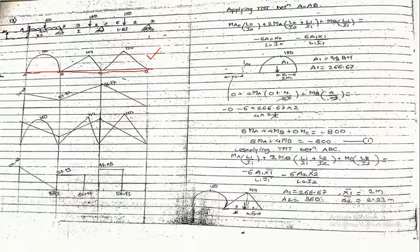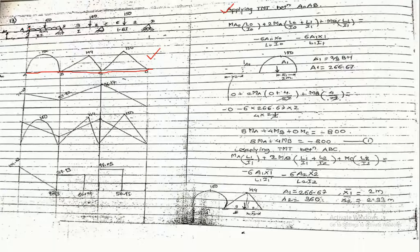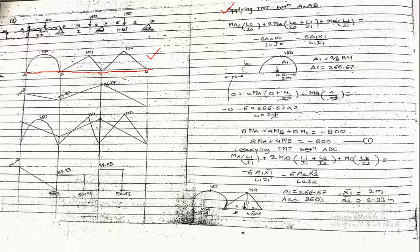The first step — the free bending moment diagram — is now complete. Now we apply the 3-moment theorem. For a fixed support, remember that whenever there is a fixed support, there is a moment at that support. In earlier classes, at the end supports with hinge or roller, we took that moment value as zero directly. But for a fixed support, the moment is not zero — it has some value. So at A there is an unknown moment, and unknowns also exist at B and C. There are three unknown moments, so we apply the 3-moment theorem three times.